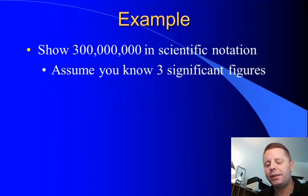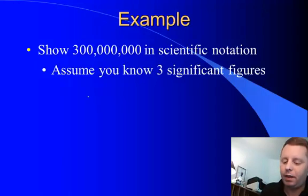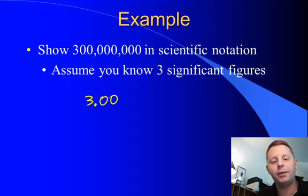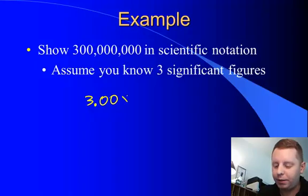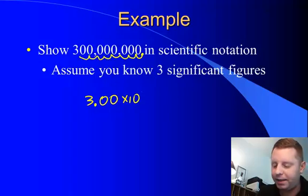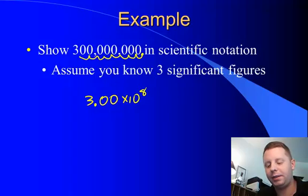If we start with something like 300 million in scientific notation and assume we know this to three significant figures, let's write this in scientific notation. That would be one significant figure to the left of the decimal place. We know three significant figures, so there's our three significant figures. And it's multiplied by 10 to some power. What power is that? Well, if we put the decimal place, start it here, and it moved one, two, three, four, five, six, seven, eight steps, that must be 3 times 10 to the eighth.